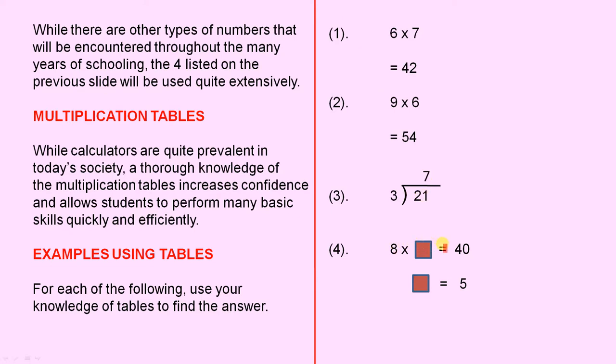Eight times something equals 40. A thorough knowledge of tables tells you that eight fives are 40. So the square equals five.